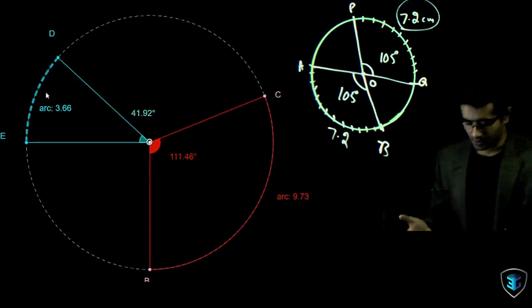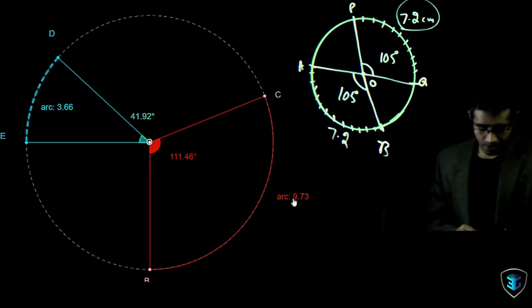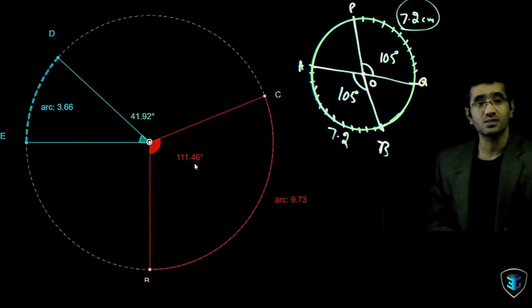I can see two arcs here, the blue arc that is DE, which is 3.66 and it subtends an angle of 41.92 degrees at the center. Now we have another arc BC, which is 9.73, which is bigger compared to this, and it subtends an angle of 111.46 degrees at the center.